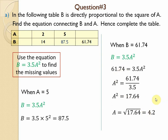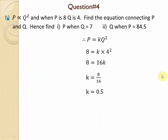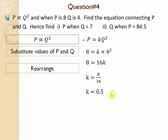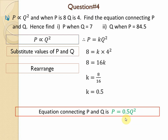Question number four is the same structure as question three, just with different values. p is directly proportional to q². Write the equation p = kq². Substituting p = 8 and q = 4: we get k = 0.5. The equation becomes p = 0.5q².